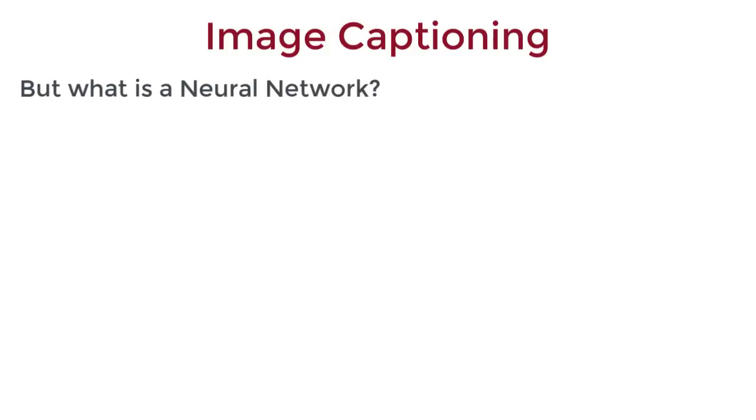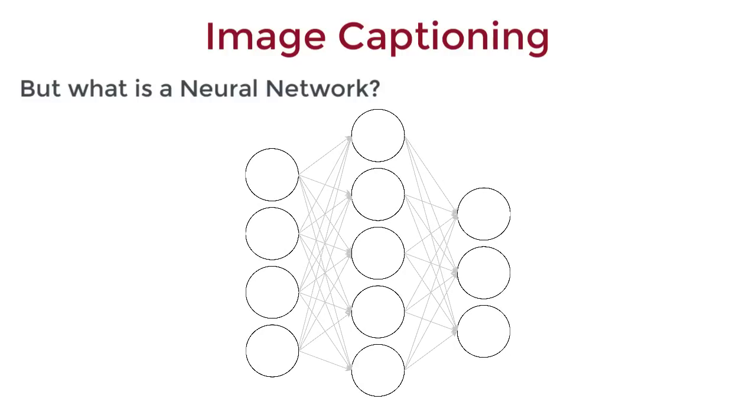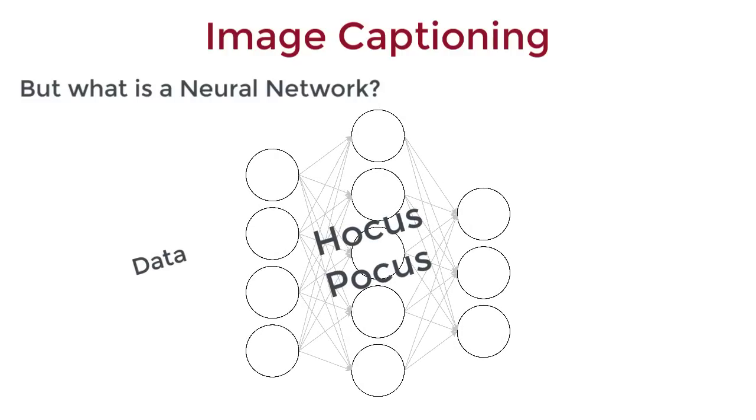When you hear the term neural network, what do you think? Perhaps an interconnection of neurons that takes raw data as input, performs some hocus-pocus in the middle, and spits out some probability in classification problems or some real values in case of regression problems. This notion of neural nets isn't incorrect. But with that understanding, can you really say what these layers represent? What exactly are these layers? Well, to understand this, it's better to think of neural nets from a more mathematical perspective.